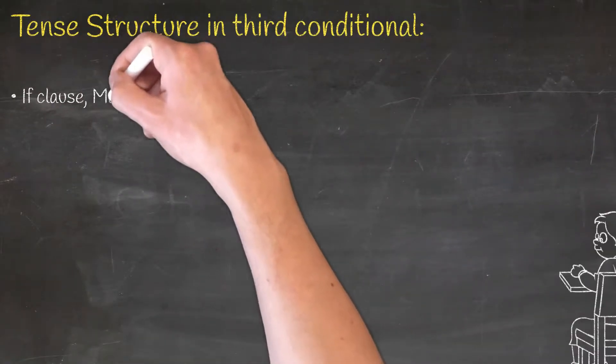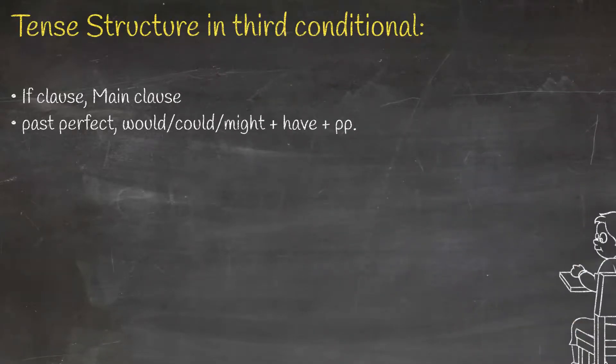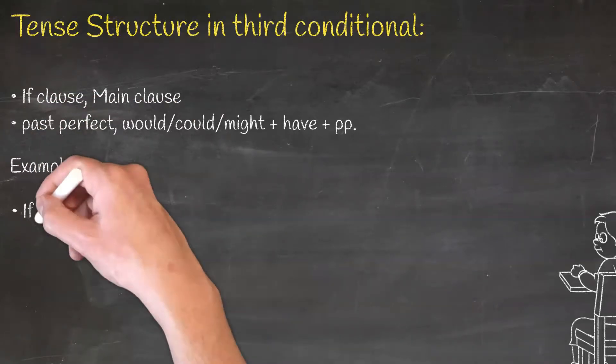The past perfect tense in the if clause, would/could/might plus have plus past participle in the main clause can make the third conditional.